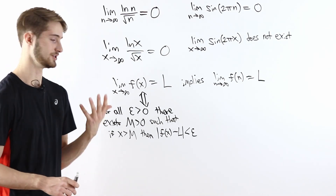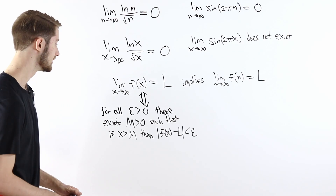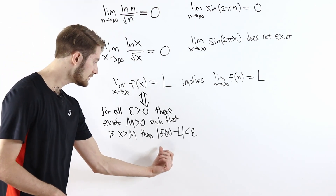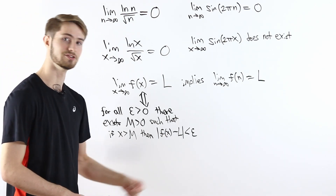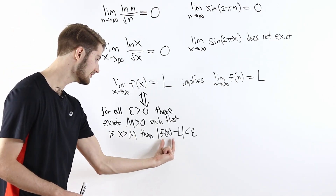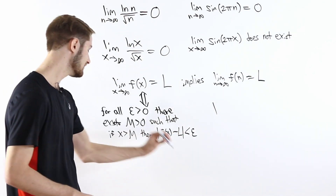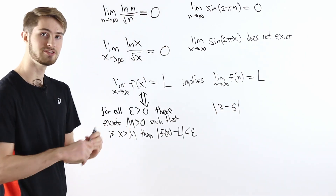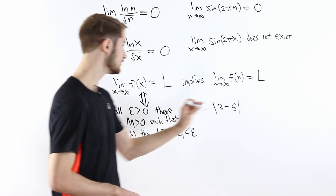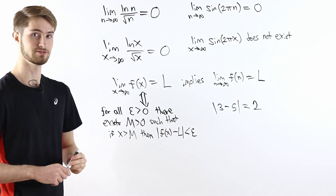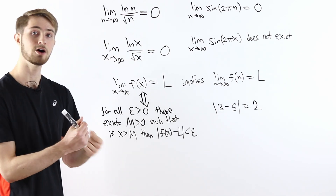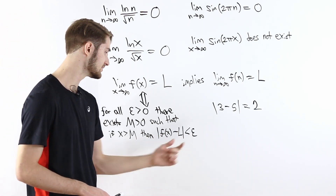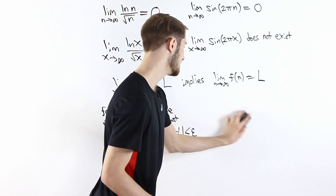Let's talk about what this definition means, starting with the last inequality: the absolute value of f(x) minus L is less than epsilon. The expression |f(x) − L| is the distance from f(x) to the number L. For example, if f(x) equals 3 and L equals 5, the distance from 3 to 5 is 2, which is also |3 − 5|. So this difference tells us how far the function f(x) is from the limit value L, and this inequality says that distance is less than epsilon.